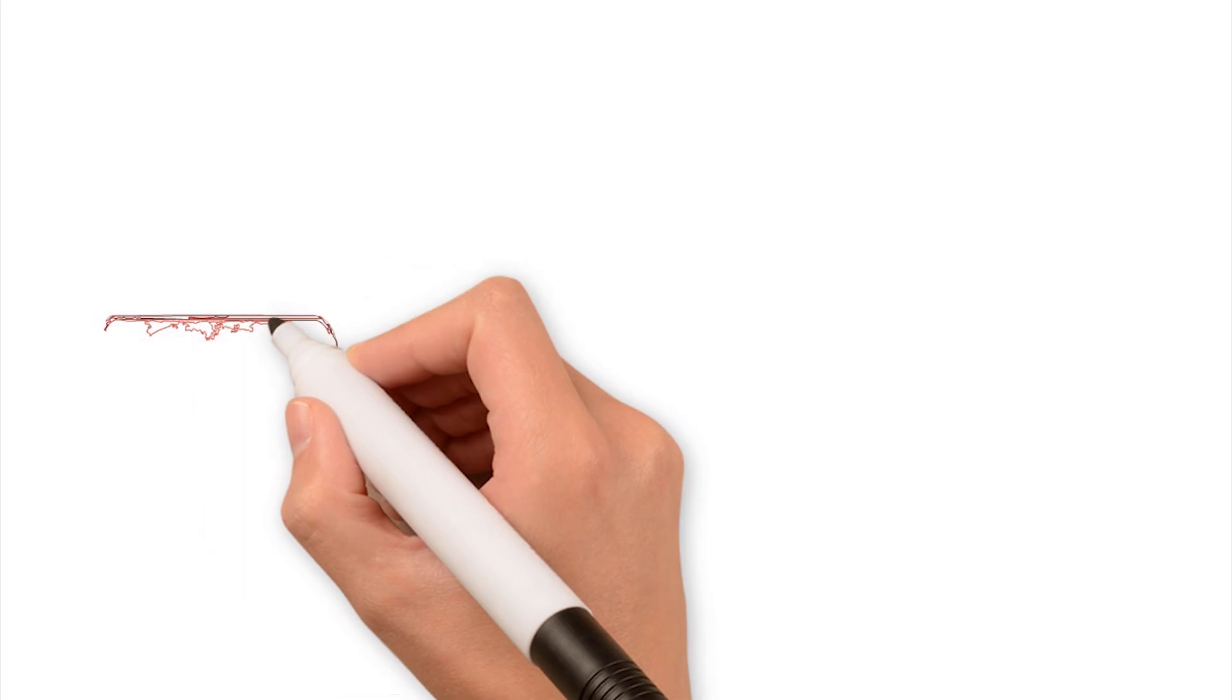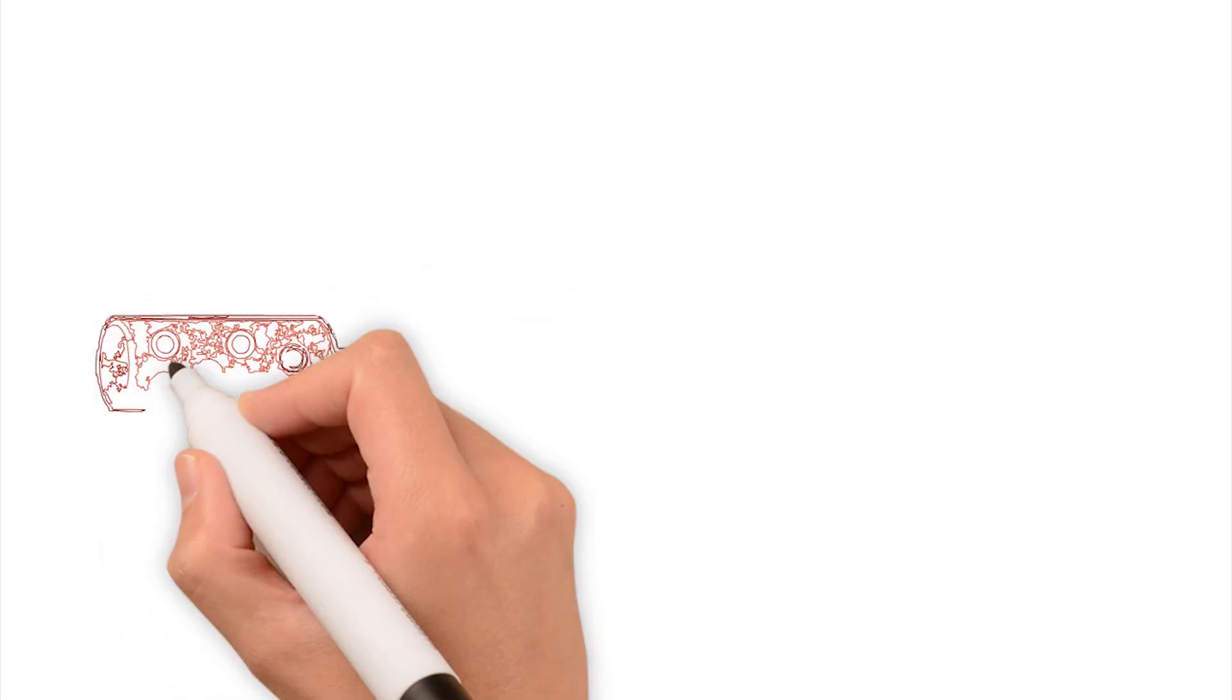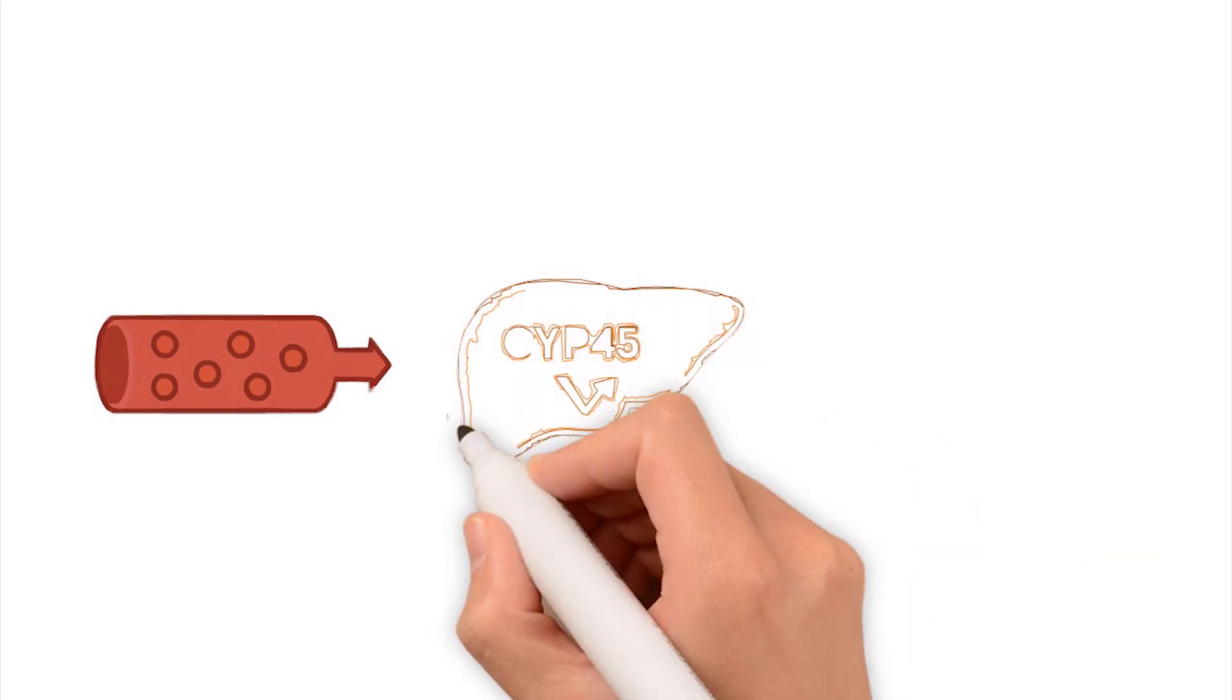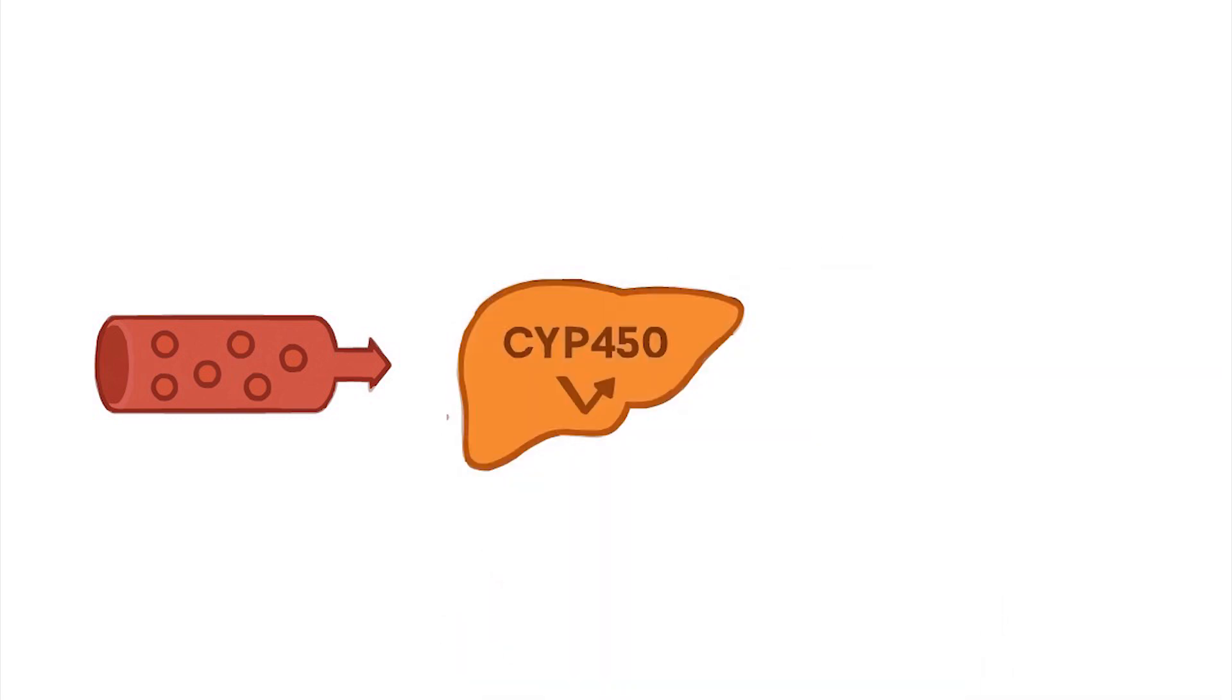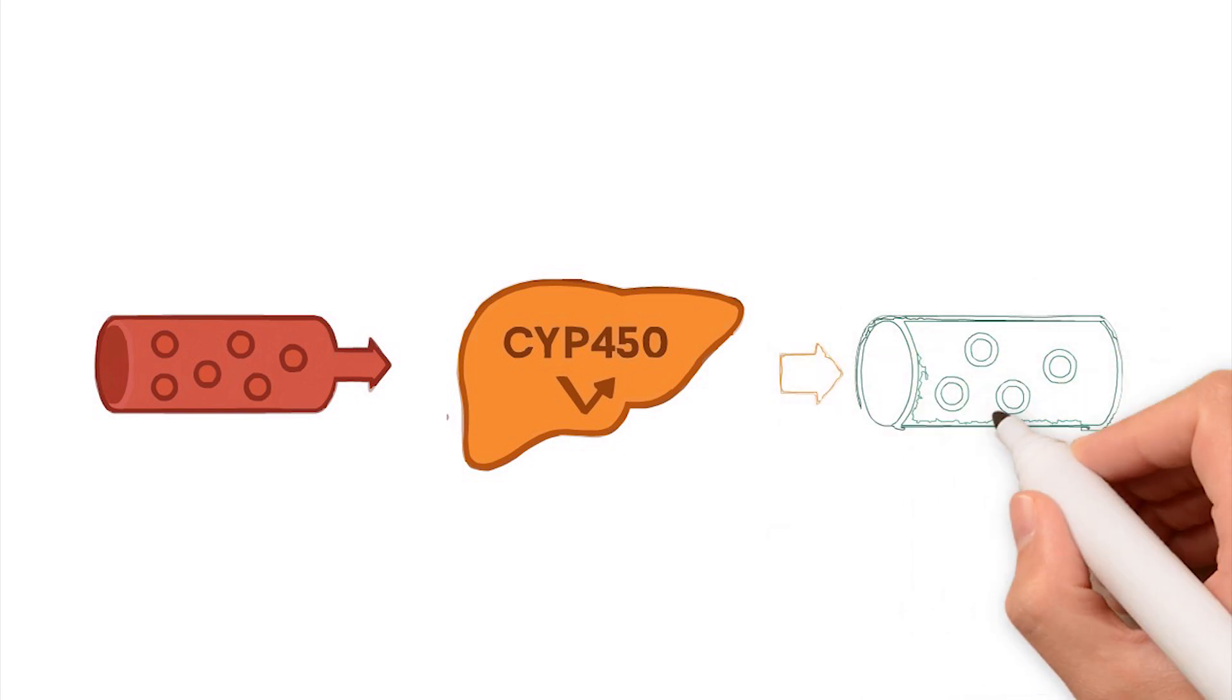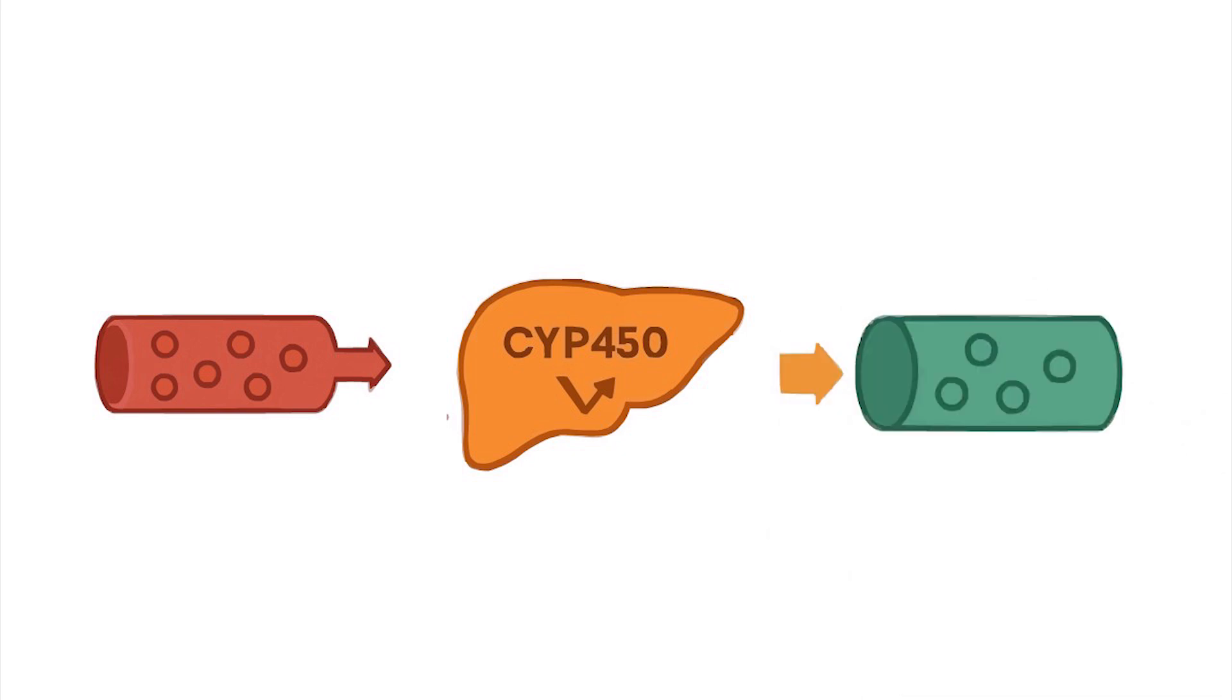And how capable the liver is at breaking the drug down, which is indicated by the intrinsic clearance of the liver. Drugs can behave differently depending on these factors, and we will use the hepatic extraction ratio concept to help us understand that.